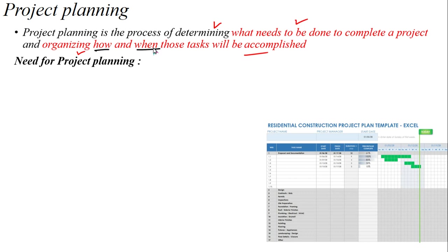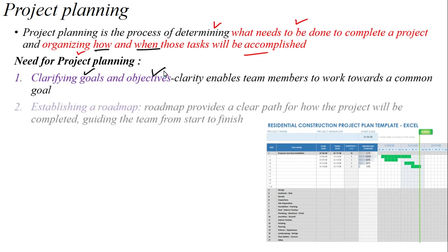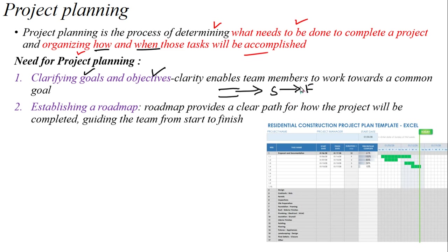What is the process of planning? Generally, there are certain reasons. One of the goals is correct, the plan is correct, objectives are correct. And one more need: establishing a road map. It will provide a proper path — a guide from the starting point to the finish point. It is just a route map. The third reason is to eliminate or to reduce uncertainty.